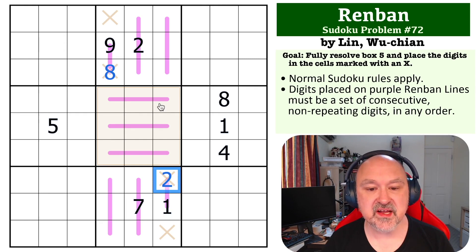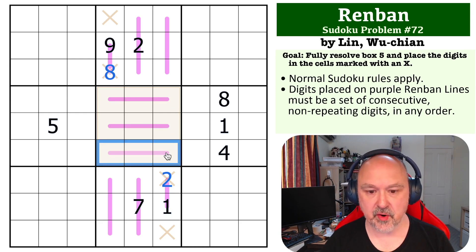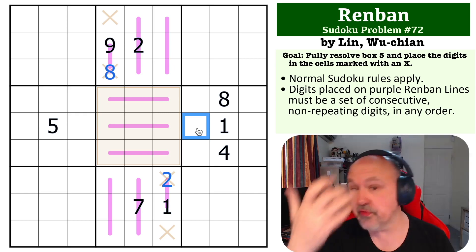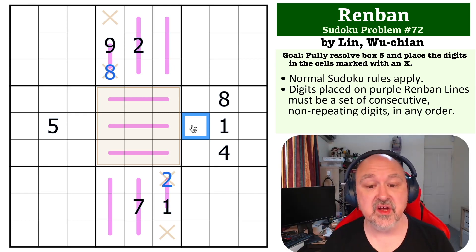Now we need to look at box 5 and realize these are three three-cell long Renban lines filling up the entire box. Wherever we put 1 in that box, we also have to put 2 and 3 on the line. Wherever we put 9 in this box, we'll have to go with 9, 8, 7. So you've got a 1-2-3 line and a 9-8-7 line, so one of these lines has to be 4-5-6.